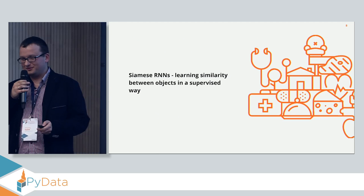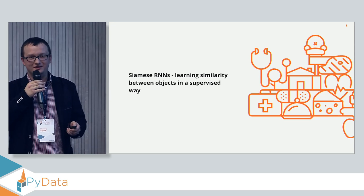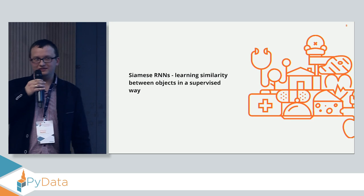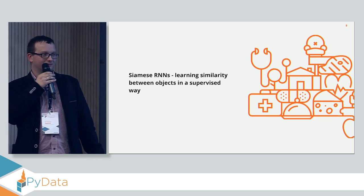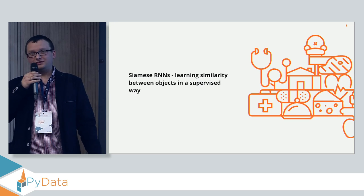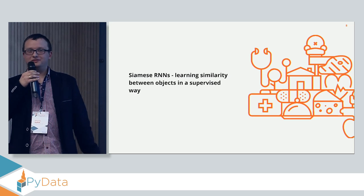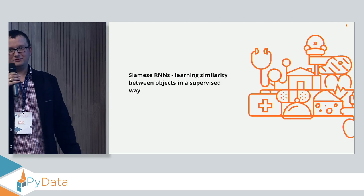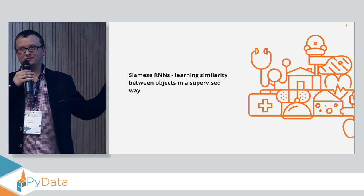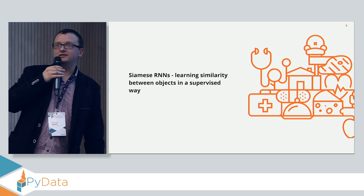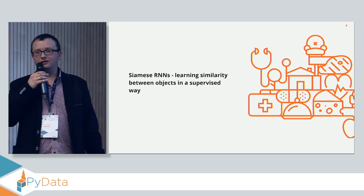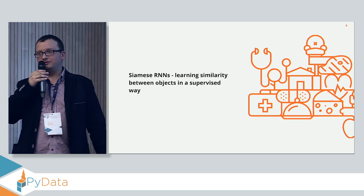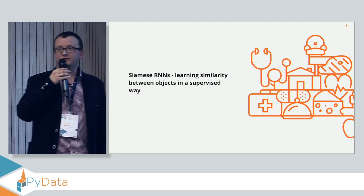We tried running simple models for similarity on these vectors and used unsupervised techniques for clustering, but it didn't work very well. So we searched for an architecture that would allow us to use supervised techniques, which are usually much stronger for such data, using word embeddings. We found an interesting idea called Siamese Recurrent Neural Networks — or Siamese Neural Networks, depending on the architecture.